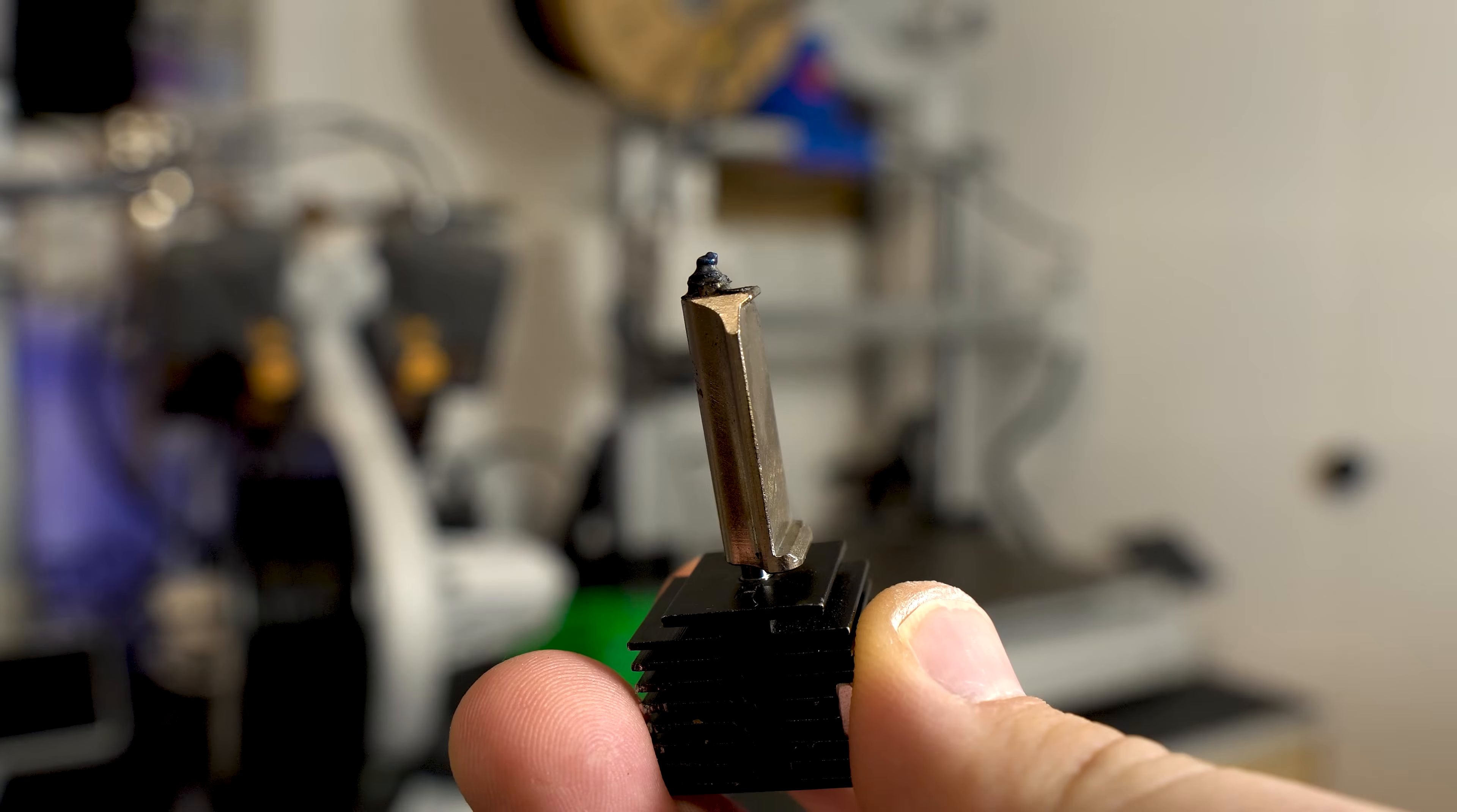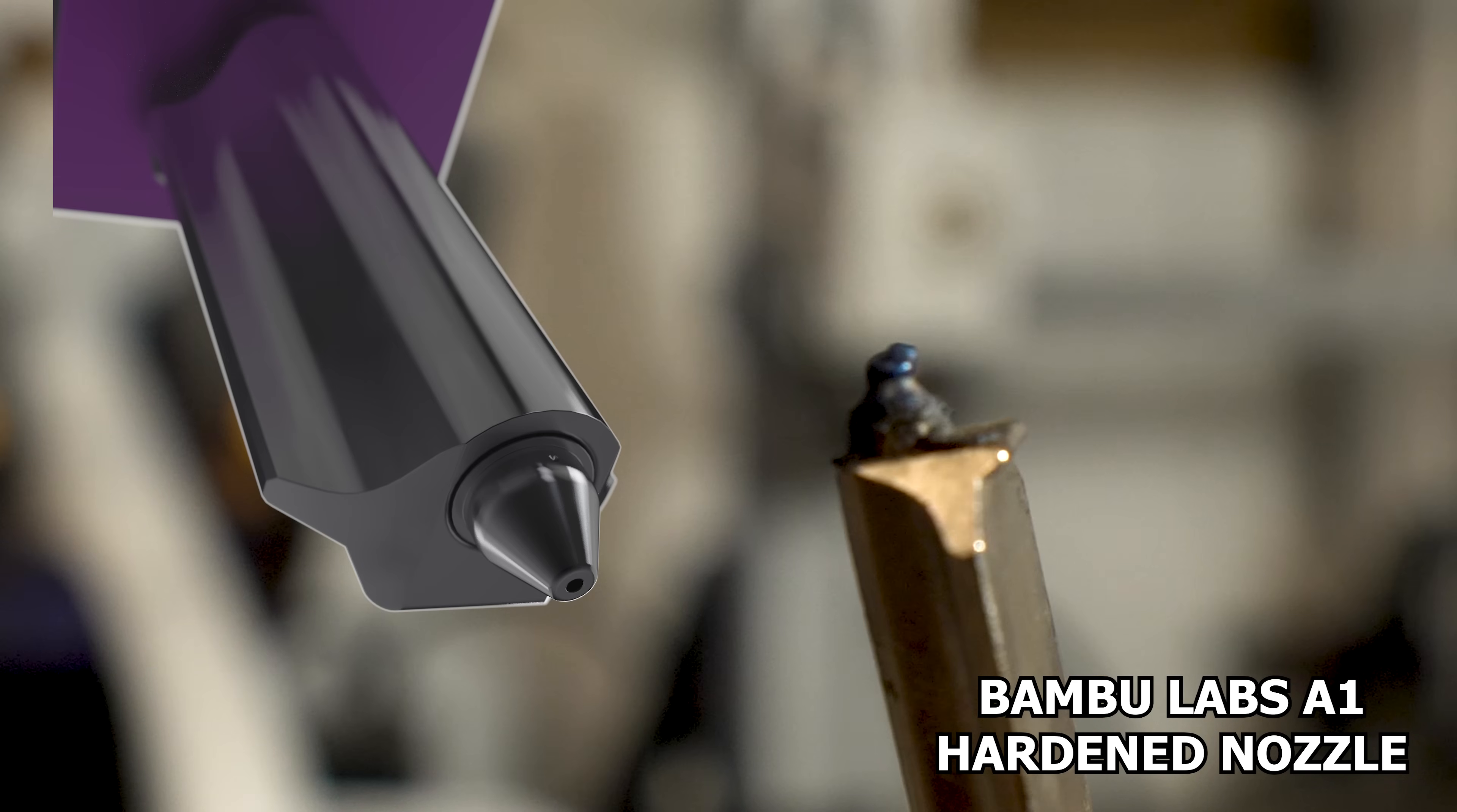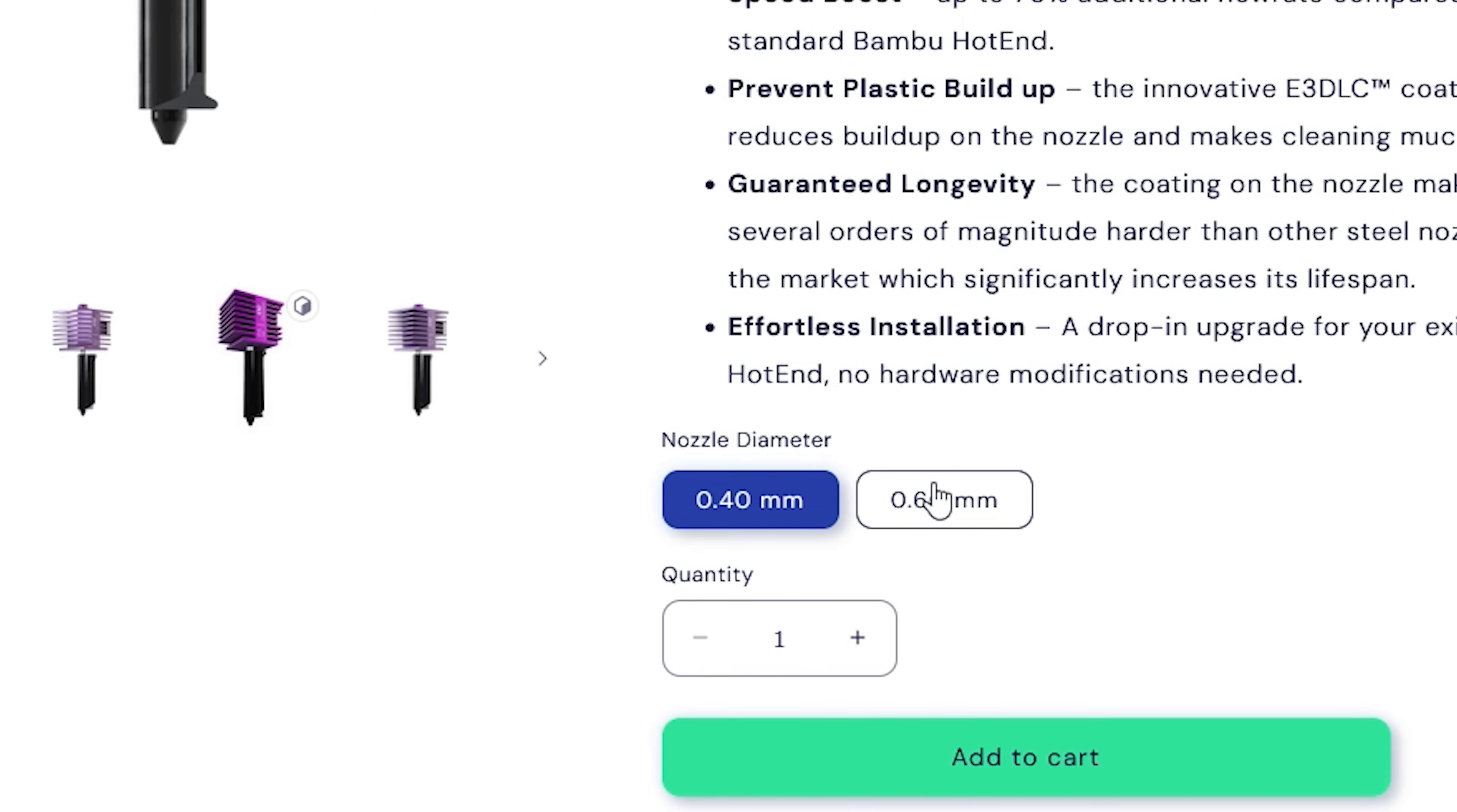One problem I have is that the hot ends I usually use will have a buildup of plastic. To ensure it doesn't interfere with the quality of my prints, these nozzles need to be maintained. The benefit of E3D's Obsidian Hot End is that it is equipped with a non-stick E3DLC coating that reduces buildup on the nozzle and makes it easier to clean. This also limits the amount of defects you'd see in your prints. Coating makes Obsidian nozzles a lot harder than other nozzles on the market, which significantly increases its lifespan. They're available in 0.4mm and 0.6mm nozzle sizes.